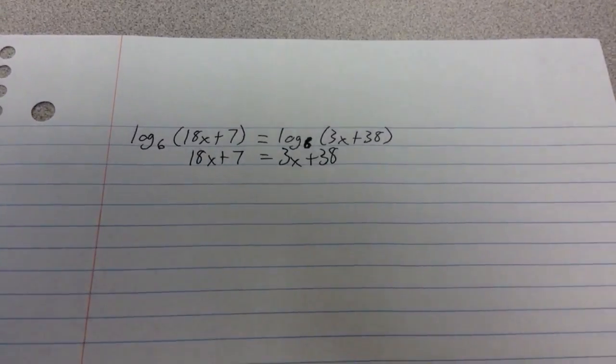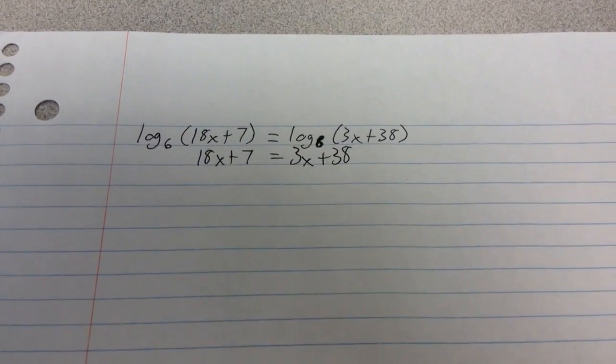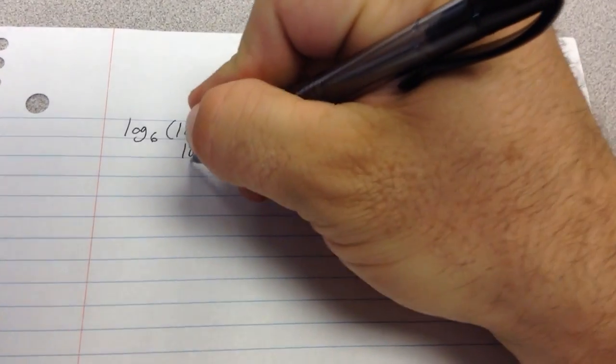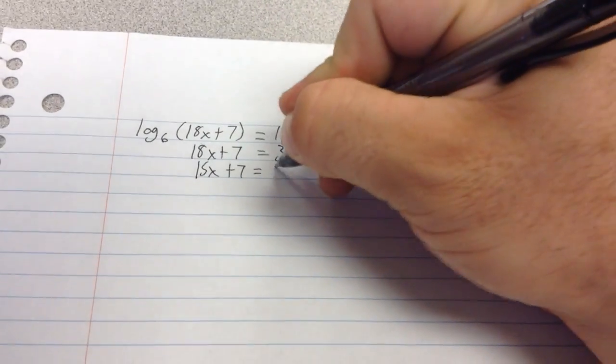So from here, all you're doing is stuff like we did back in chapter 1. You're taking this guy and you're subtracting the 3x over to get 15x plus 7 equals 38.